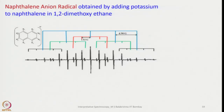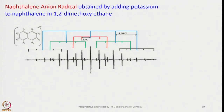This is about the naphthalene anion radical. It is very easy to prepare — you take naphthalene in very dry, freshly distilled 1,2-dimethoxyethane and add sodium or potassium. You can immediately generate potassium or sodium salts of naphthalide. The characteristic blue color is due to the formation of the radical, so we call it the naphthalene anion radical.